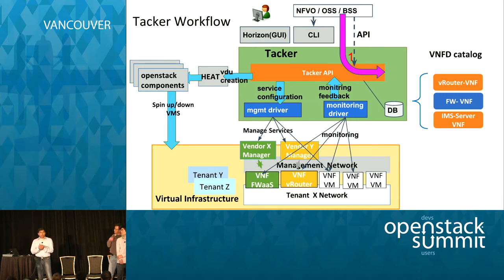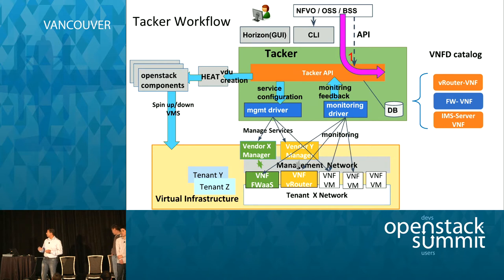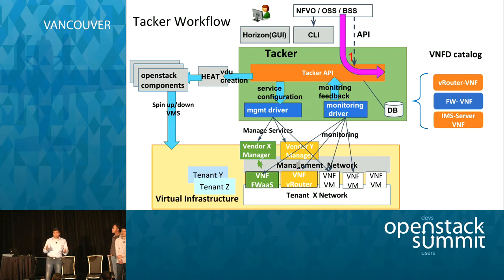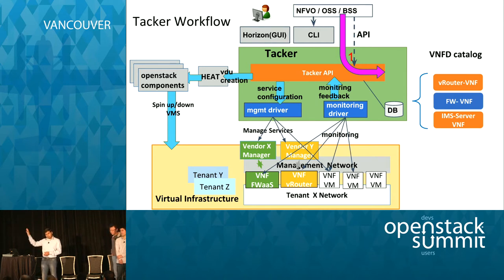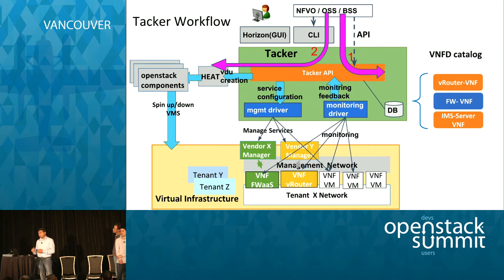You would basically onboard all your VNFs. Your VNFs might be virtual routers, virtual firewalls, a virtual EPC, or a virtual IMS server. You build out these VNF definitions — they spec out the actual VMs backing that VNF. Using proper MANO terminology, it's called a VNF descriptor (VNFD). Once you have a catalog of VNF descriptors, you are ready to launch or instantiate a VNF.